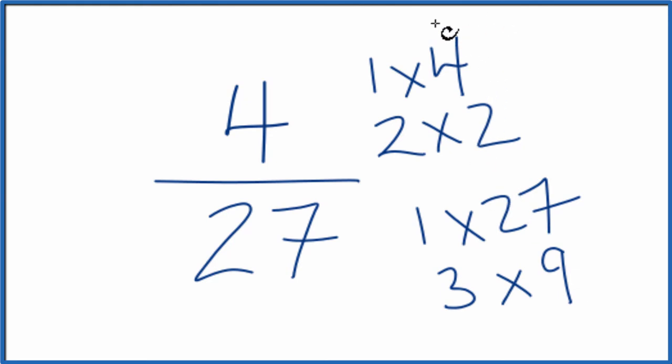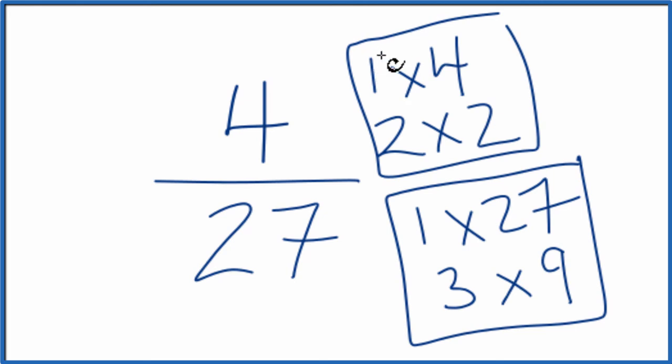So as we look at the factors here for the numerator and then the denominator, the only thing in common is 1. Because of that, we can't reduce 4/27 any further. It's in its simplest form. If you divided 4 by 1 and 27 by 1, you'd still have 4/27.